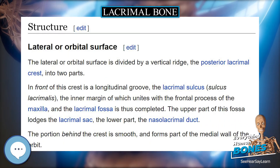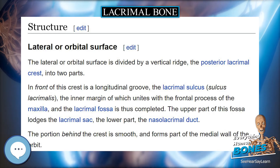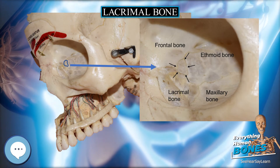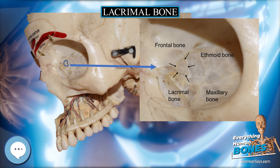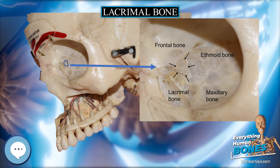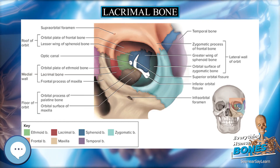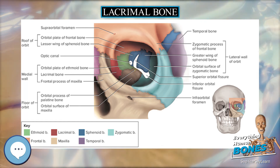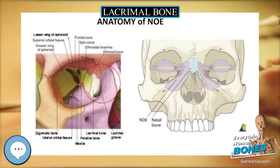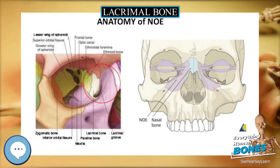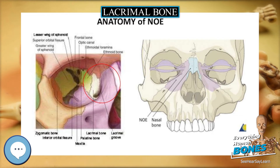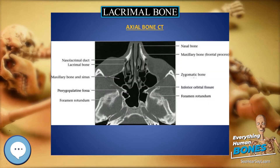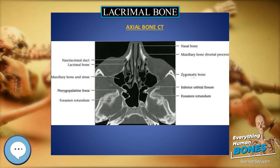In early lobe-finned fishes and ancestral tetrapods, the lacrimal bone is a relatively large and robust bone, running from the orbit to the nostrils. It forms part of the side of the face between the nasal bones and the maxilla. In primitive forms, it is often accompanied by a much smaller septomaxilla bone lying immediately behind the nasal opening, but this is lost in most modern species.